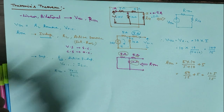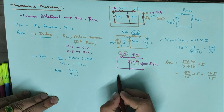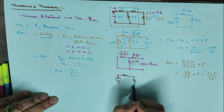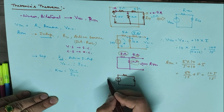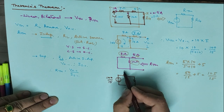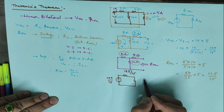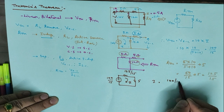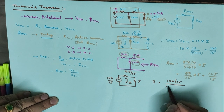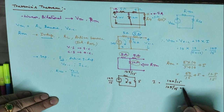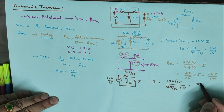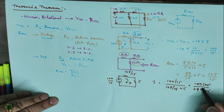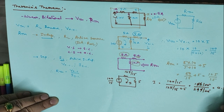Now I need to find the Thevenin equivalent circuit to find the current passing through R4. The circuit has Vth which is VOC = 100/15, and Rth is 125/15, and R4 is 5 ohm. Current I is equal to 100/15 divided by 125/15 plus 5, which equals 100/15 divided by 200/15. The 15s cancel, and finally it will be 0.5 ampere.